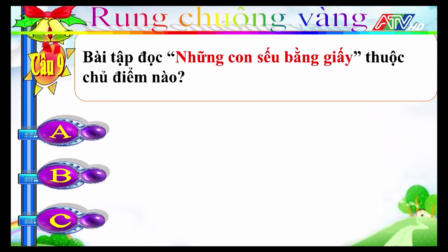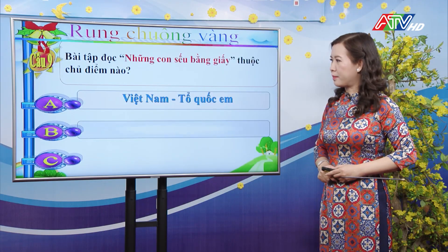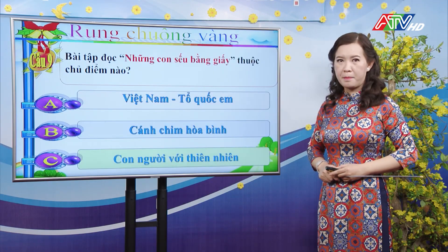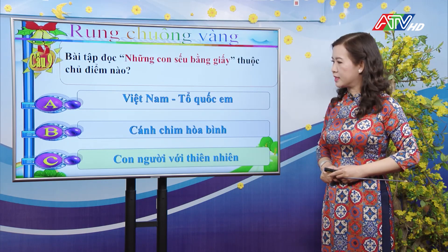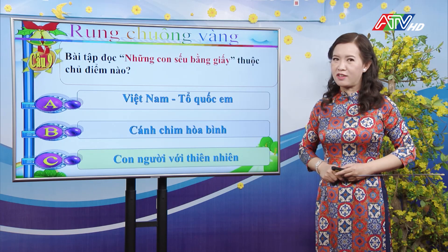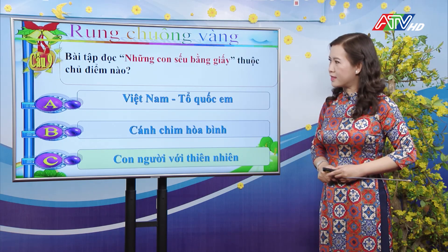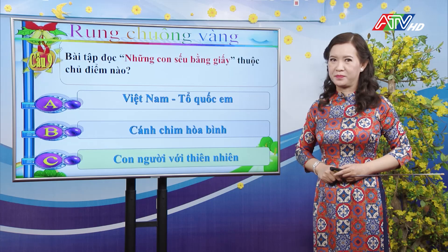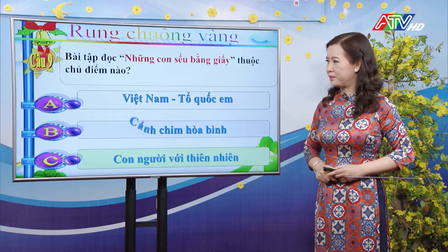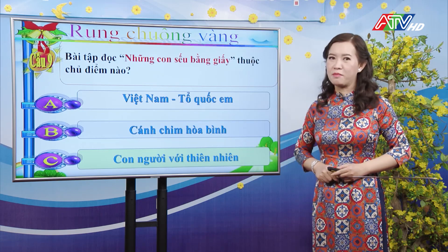Câu 9: Bài tập đọc "Những con sếu bằng giấy" thuộc chủ điểm nào? A-Việt Nam tổ quốc em; B-Cánh chim hòa bình; C-Con người với thiên nhiên. Đáp án đúng là B: bài "Những con sếu bằng giấy" thuộc chủ điểm Cánh chim hòa bình.